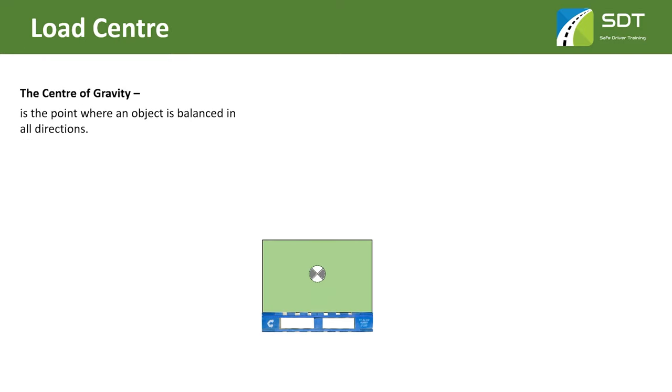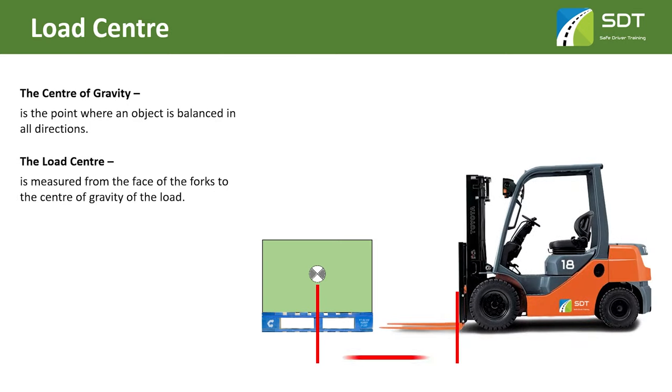To work out the capacity of the forklift, we must understand what load center is, because the forklift capacity depends on the position of your load on the forks. The center of gravity is the point where an object is balanced in all directions, which most of the time means the middle of your load. The load center is measured from the face of the forks to the center of gravity of the load.